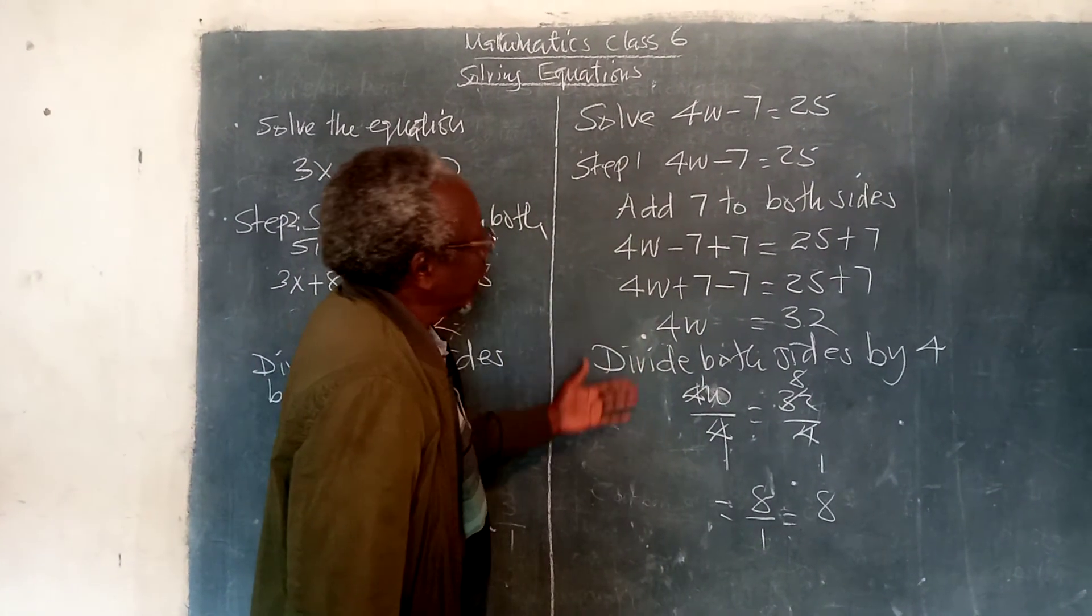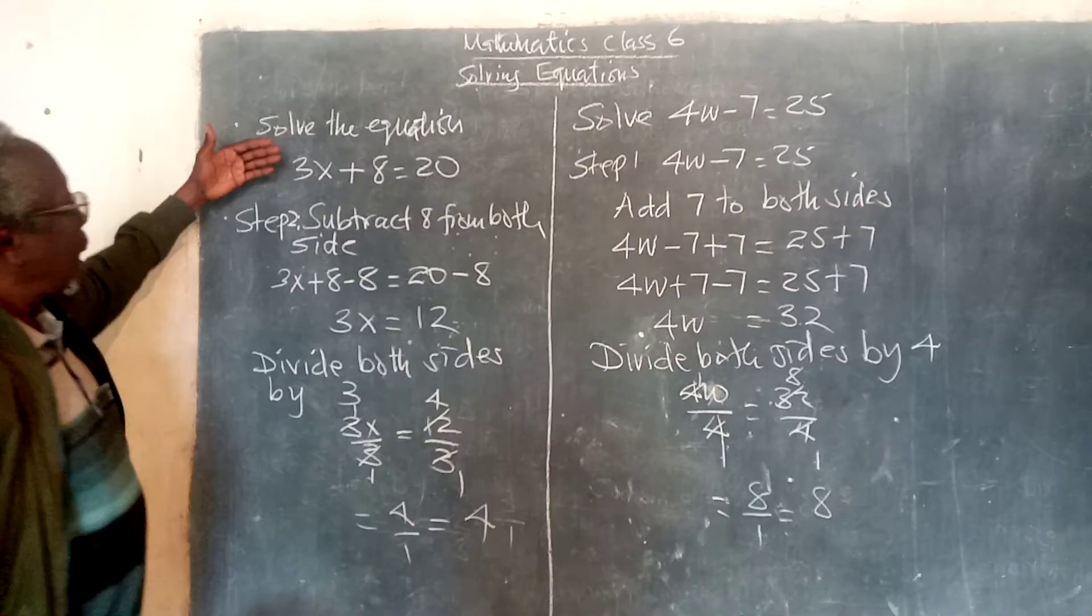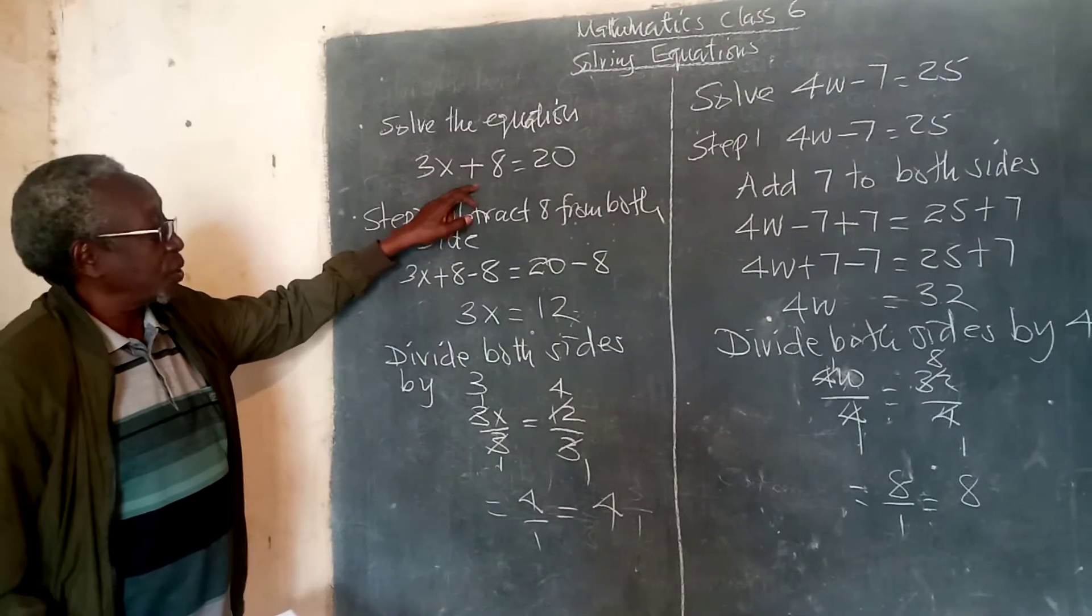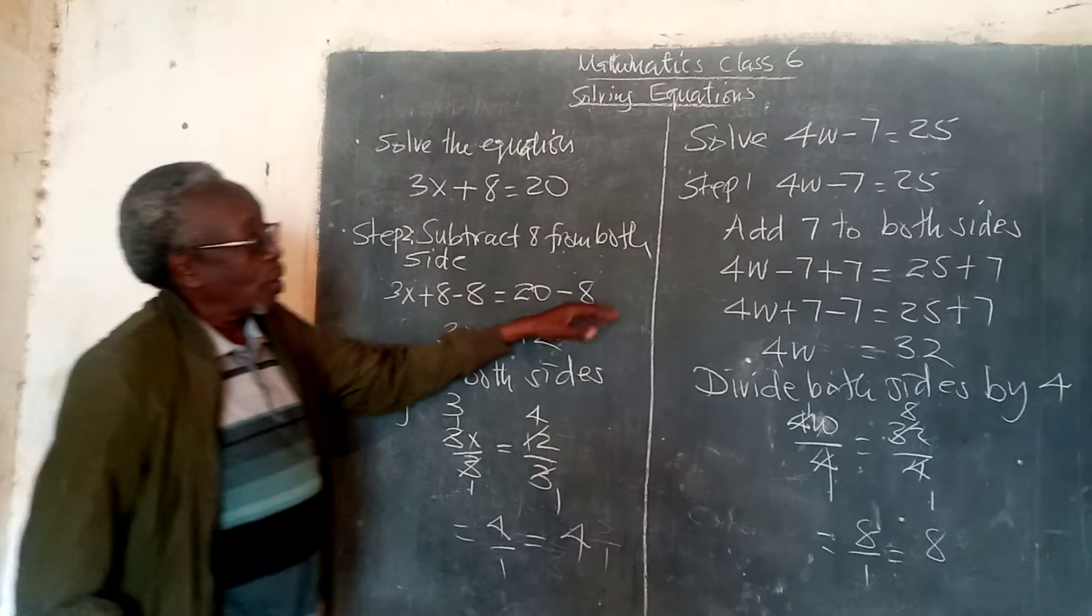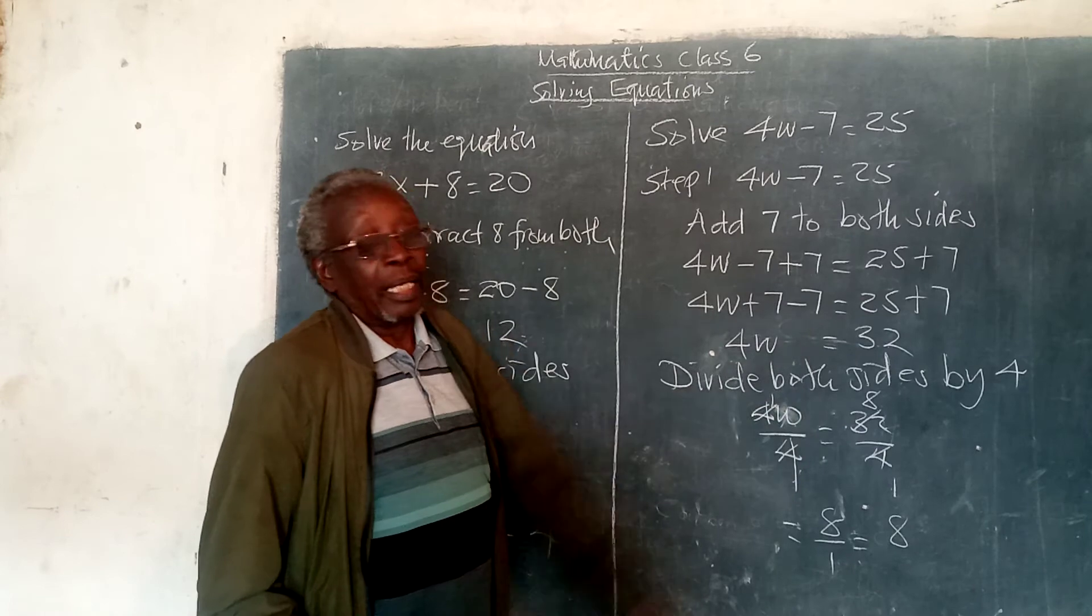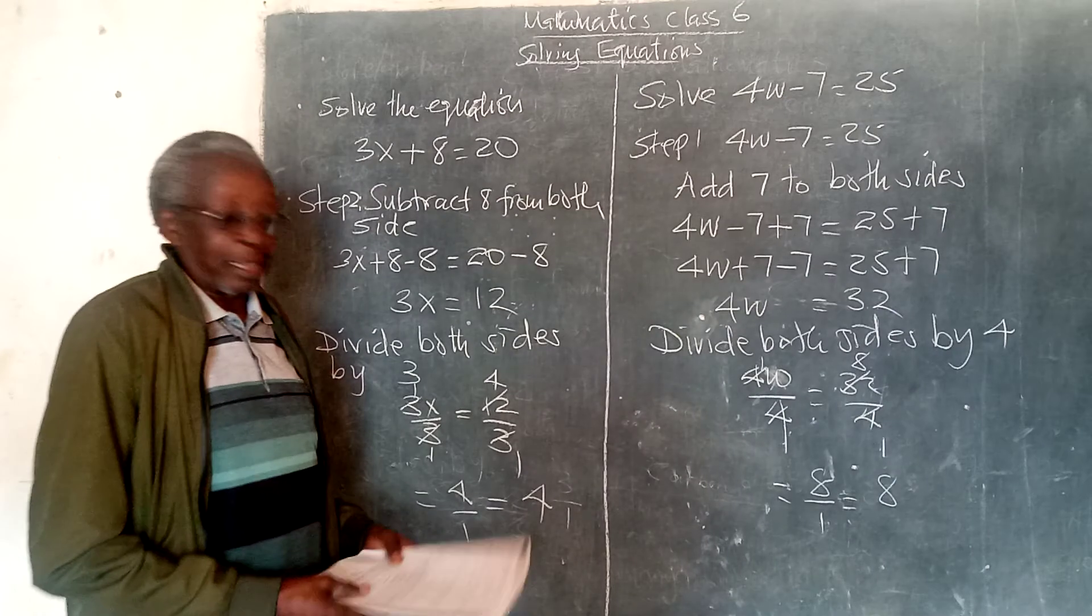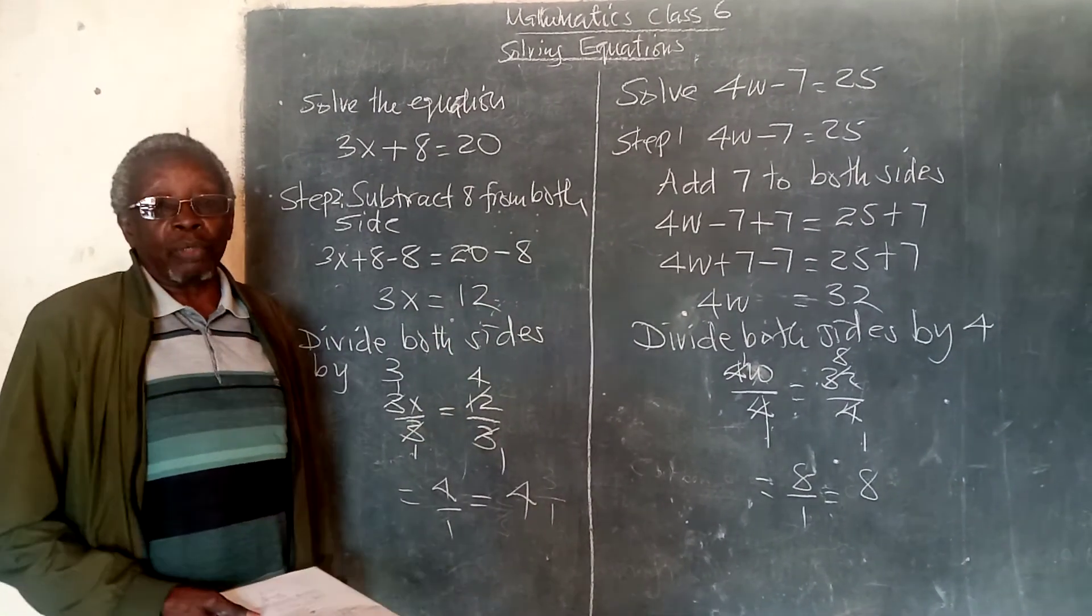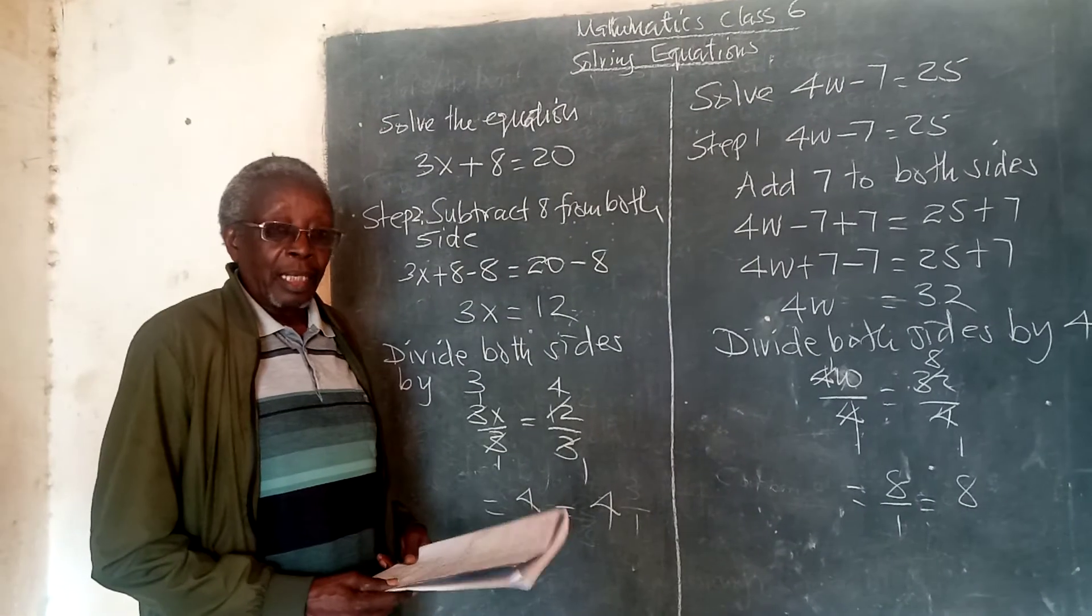So, this is the way we solve equations. Here, when we have an addition here, then we say subtract 8 from both sides. When we have a subtraction here, we say add 7 to both sides. And this is how we solve equations. So, in the next time I come, we shall continue with solving these equations, and I hope and believe you have understood. Good day.